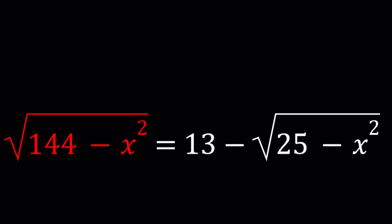Hello everyone. In this video we're going to be solving a radical equation. We have the square root of 144 minus x squared equals 13 minus the square root of 25 minus x squared. And we're going to be solving for x values. So I'll be presenting two methods and let's start with the first one.